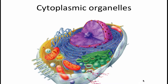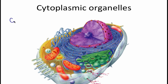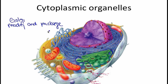The next organelle is the Golgi apparatus. The purpose of Golgi bodies is that they act sort of like a UPS or delivery guy — they're going to modify and package materials and secrete them outside of the cell. In addition, the Golgi apparatus can pinch off and produce lysosomes.